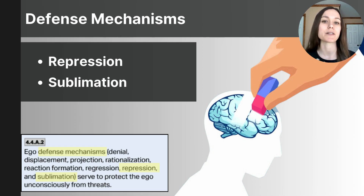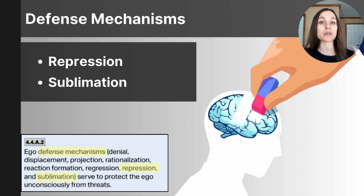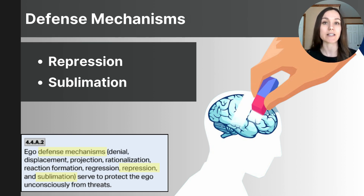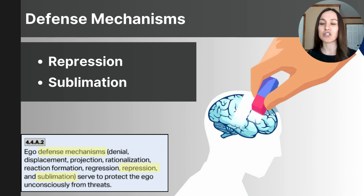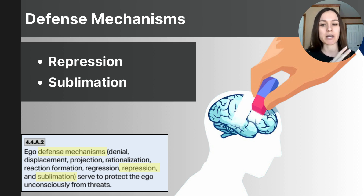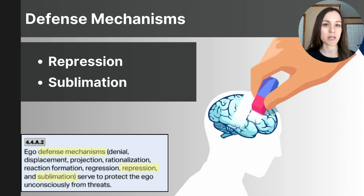The final defense mechanism is sublimation — channeling an unacceptable impulse into something more socially acceptable. For example, someone with aggressive tendencies might channel that aggression into boxing or becoming a combat soldier. These are the defense mechanisms you need to be familiar with.